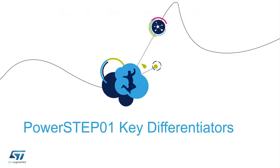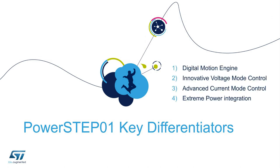There are four key differentiators of PowerStep01. Number one, the digital motion engine. Number two, the innovative voltage mode control. Number three, the advanced current mode control. And the last point is extreme power integration. The digital motion engine is at the heart of the first three key differentiators. The last one is package technology, called system in package.